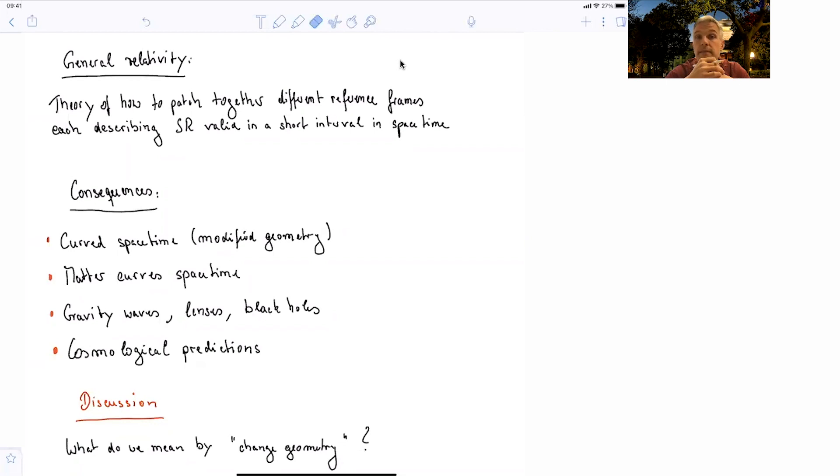In this quest, we can understand the theory of general relativity as a theory of how to patch together different reference frames, which each can be described in special relativity, the framework we discussed up to now, and is valid in short intervals in space time.